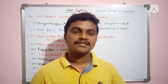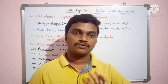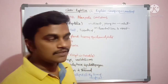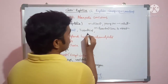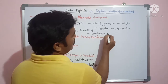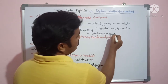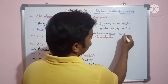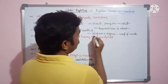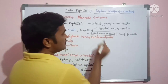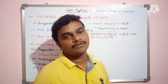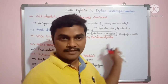Reptilia also possess Jacobson's organs, which are special sensory organs present in the roof of the mouth. These Jacobson's organs are present in reptilia at particular regions on the roof of the mouth.